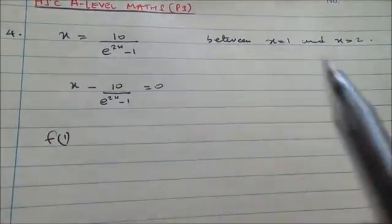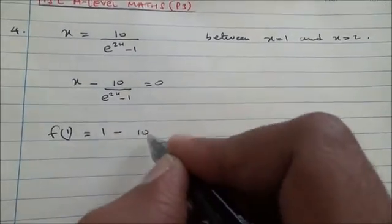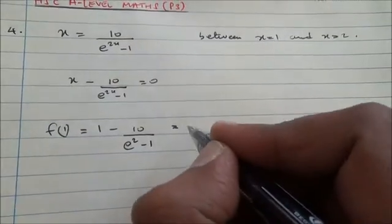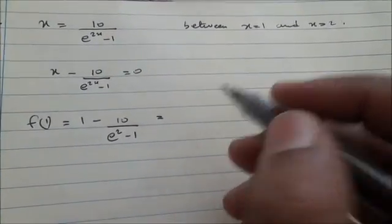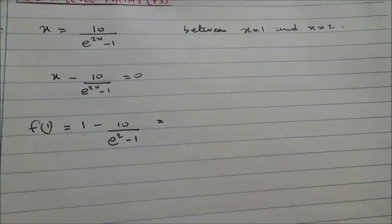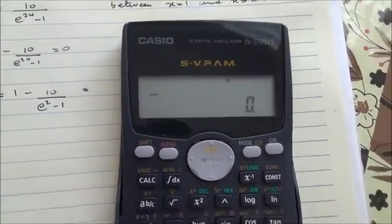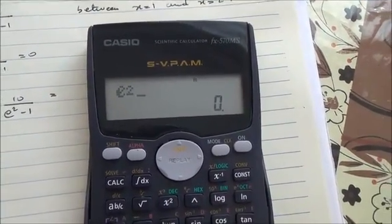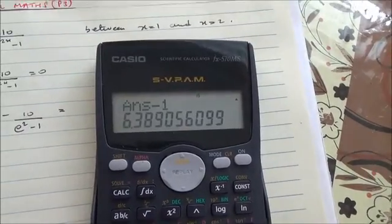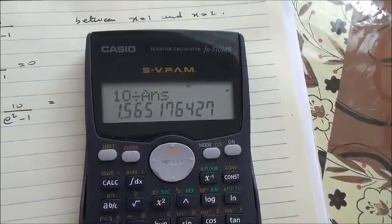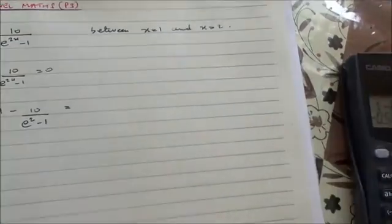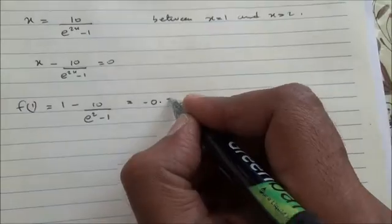We define f(x) and evaluate at x equals 1: f(1) equals 1 minus 10 over e to the power of 2 times 1, so e squared minus 1. Calculating on a calculator — 10 divided by e squared minus 1 — gives approximately 1.565, so 1 minus 1.565 gives f(1) equals minus 0.565.